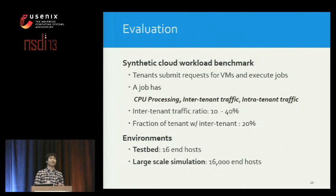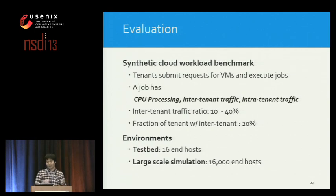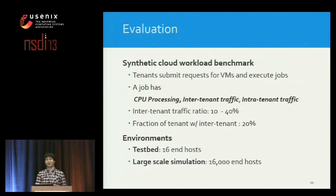So far I've described Hadrian's concepts and mechanisms. To evaluate the benefit of Hadrian, we use a synthetic cloud workload benchmark that models a tenant as CPU processing, intra-tenant traffic, and inter-tenant traffic. Throughout the benchmark, many tenants request a job, run it, and leave the data center, and the placement algorithm can accept or reject based on availability. We draw simulation parameters relating to inter-tenant traffic from measurement results, run this benchmark on a small-scale testbed with 16 hosts, and also run a flow-level simulator at a large scale of 16,000 hosts.